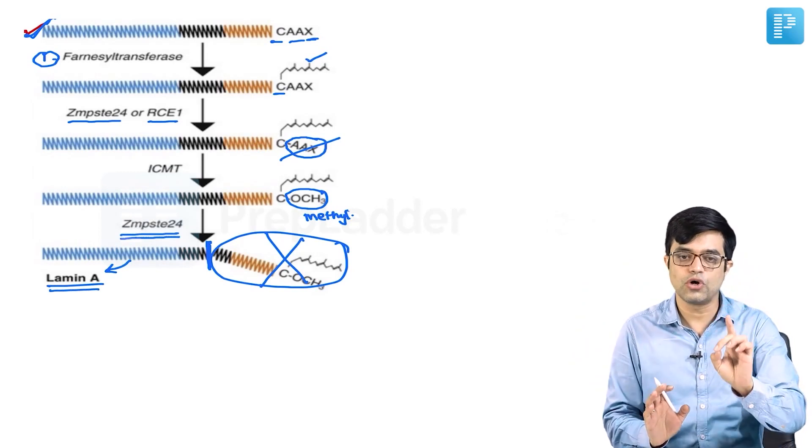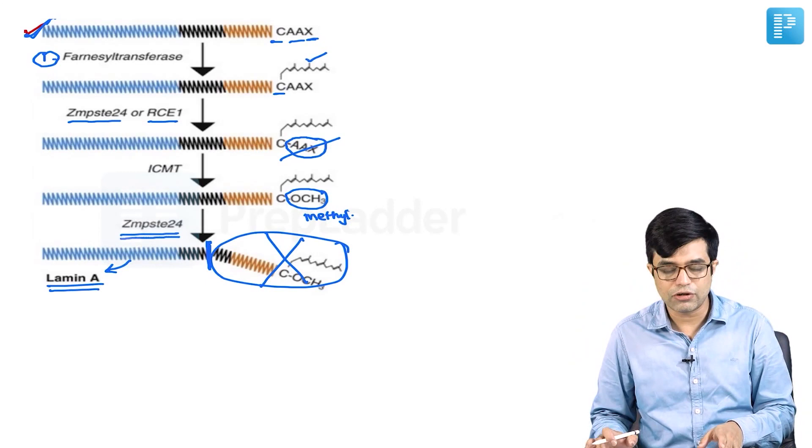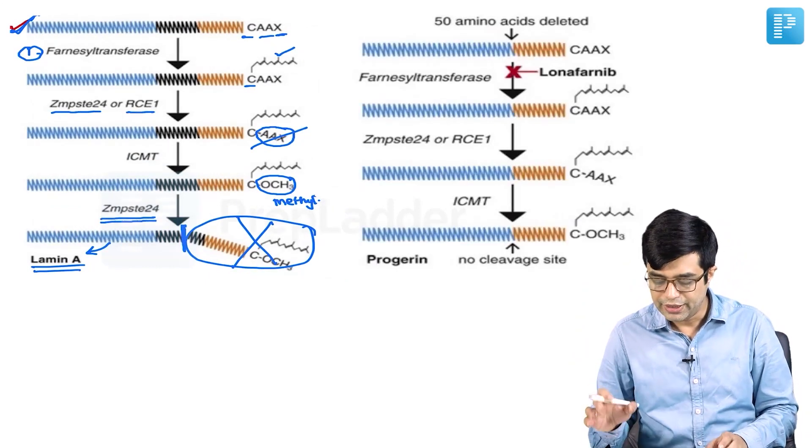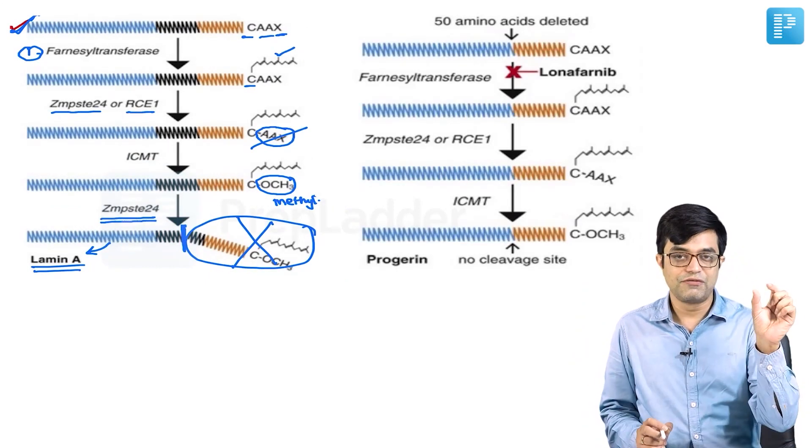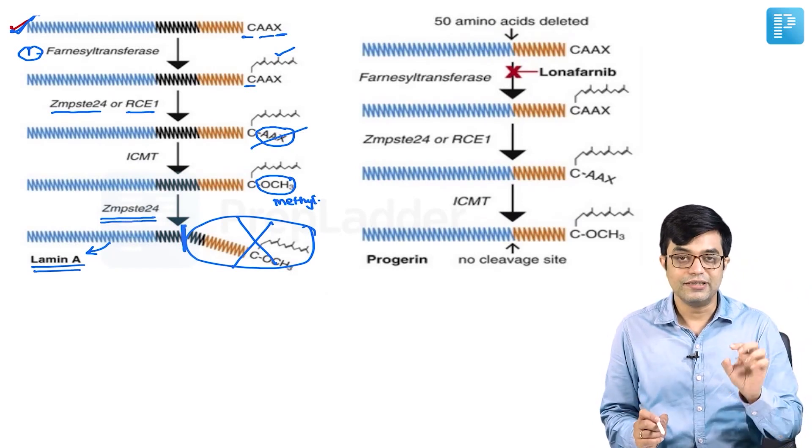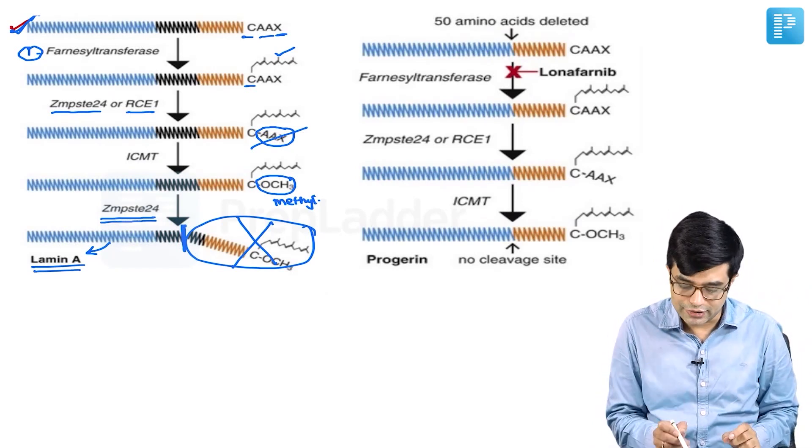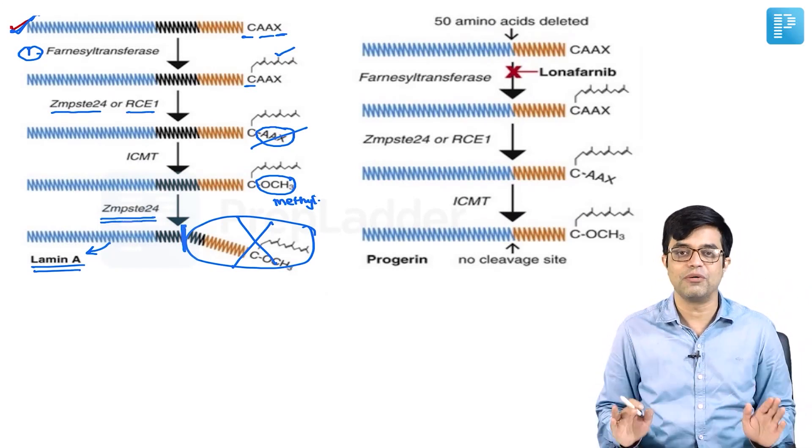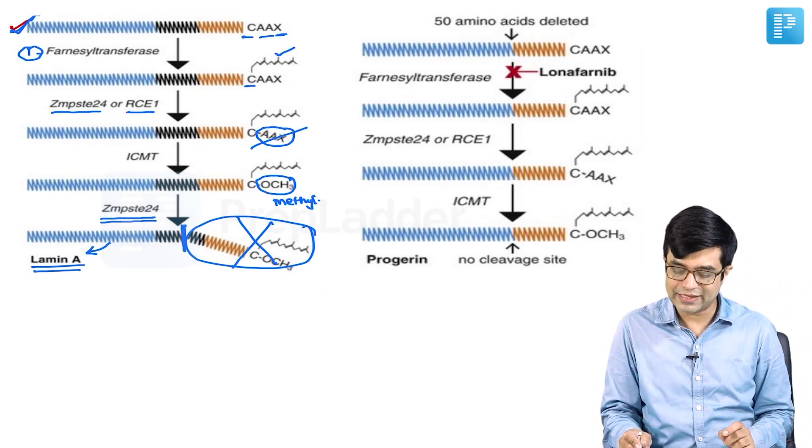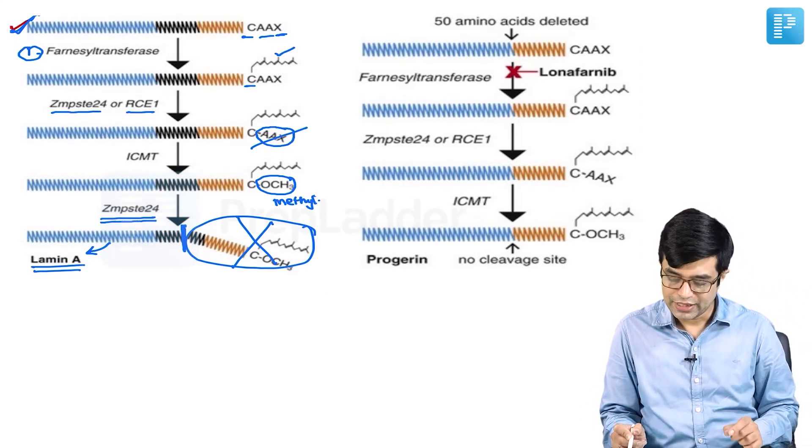This is what is normally happening. Now let us see what happens in progeria. In progeria, because 50 amino acids had been deleted, the 50 amino acids which are deleted are that black segment which is not getting formed. That black segment is missing.